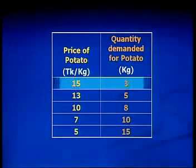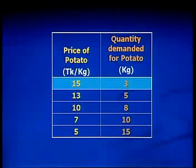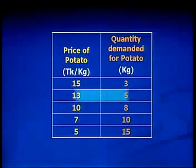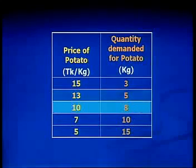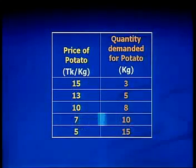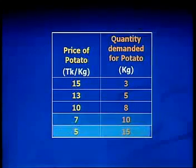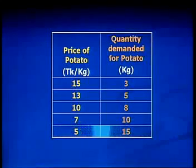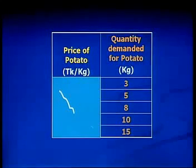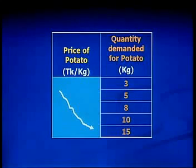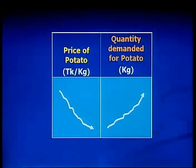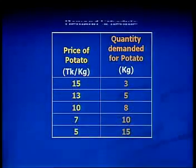We can see that when the price of the commodity — that means potato — is 15, the quantity demanded for potato is 3 kilos. When the price is 13, the quantity demanded is 5. When the price is 10, the quantity demanded is 8 kilos. When the price is 7, the quantity demanded is 10. And when the price is 5, the quantity demanded is 15. So, we can see that when the price of potato decreases, the quantity demanded for potato increases. This is called a demand schedule.